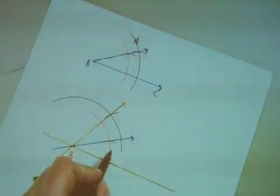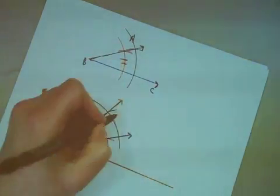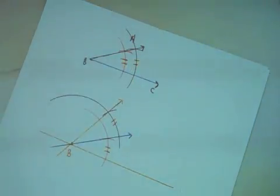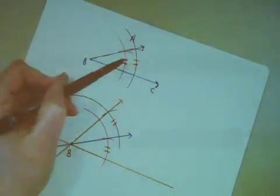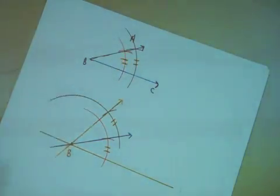So this angle here is congruent to this angle here, and this angle here is congruent to this angle here, and because the red and the black angles, these marks here that I've made, are the same angle, that means this red and this black angle are the same angle, which means if I go from here,